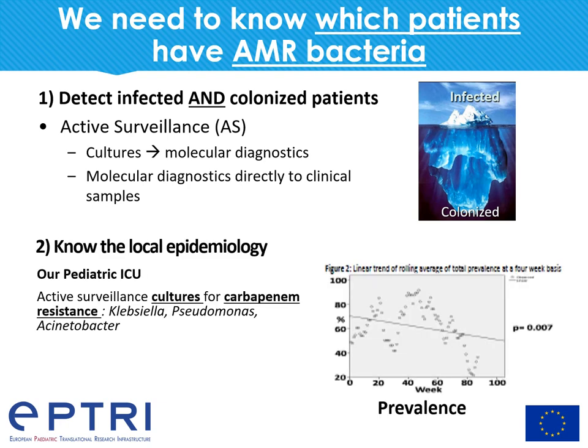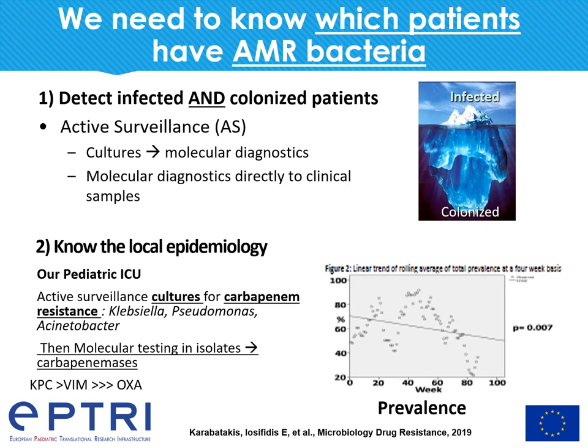In addition, we need to know the local epidemiology. In our pediatric ICU, we have done active surveillance cultures for carbapenem-resistant bacteria, and as we can see in the figure, we have a problem with carbapenem-resistant Klebsiella, Pseudomonas, and Acinetobacter. We also did molecular testing on these isolates and found that the most frequent carbapenemases were KPC, followed by VIM, and very few OXA.